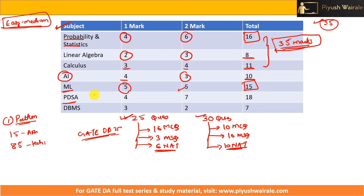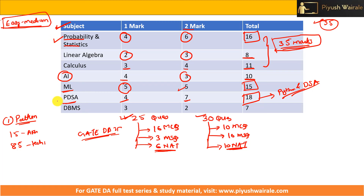For PDSA, there were four one-mark questions and seven two-mark questions, giving 18 marks. More focus was on Python, Data Structures, and Algorithms — a very important observation that 18 marks were given to PDSA. Let me also discuss the weightage: Probability & Statistics 16 marks, PDSA 18 marks.